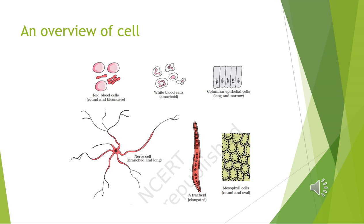Animal cells also contain a non-membrane-bound organelle called the centriole, which helps in cell division. Animal cells generally have vacuoles that are many in number but smaller in size, whereas plant cells have a very large vacuole bounded by a membrane called the tonoplast.